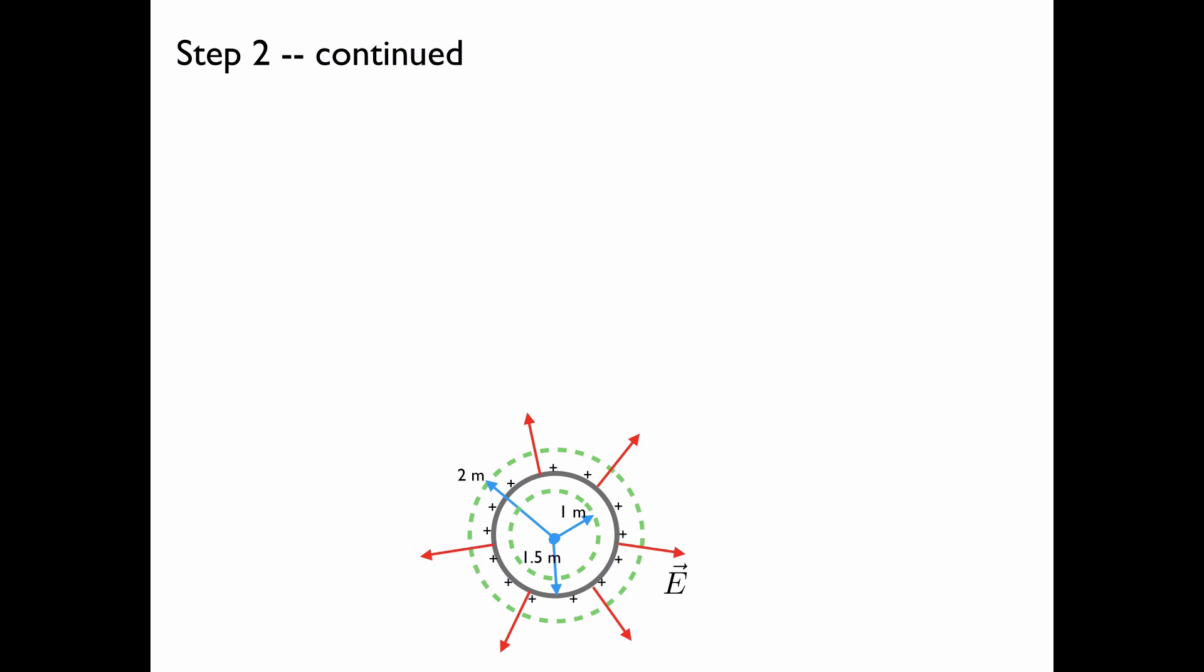Step 2 continued. If we equate the two quantities from the previous slide, we have that 4 pi r squared times E on the sphere, which is our total electric flux, is equal to the charge enclosed divided by epsilon naught. This is just a statement of Gauss's law.